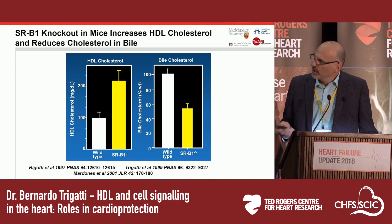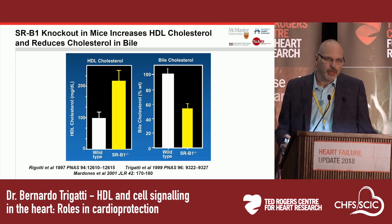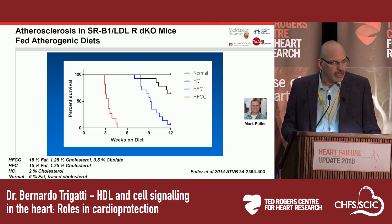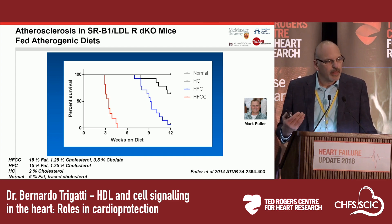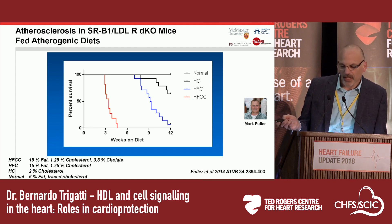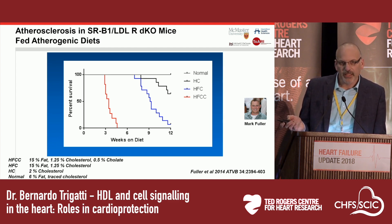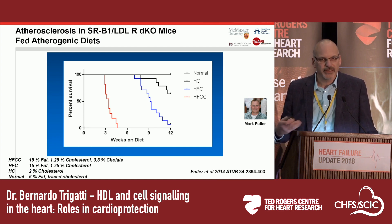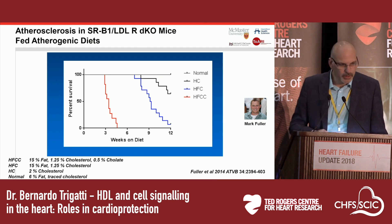To test what happens with atherosclerosis, we crossed SRB1 knockout mice with LDL receptor knockout mice, which are predisposed to develop atherosclerosis on high-fat diets. When we put these mice on high-fat diets, we saw a very surprising finding. These double knockout mice showed reduced survival, worsened by the potency of the atherogenic diet. In black are mice fed a high-cholesterol diet; in blue, mice fed a high-cholesterol, high-fat diet; and the red survival curve represents mice fed a high-cholesterol, high-fat diet containing sodium cholate, the most potent atherogenic diet. This work was done by Mark Fuller, a PhD student in the lab.